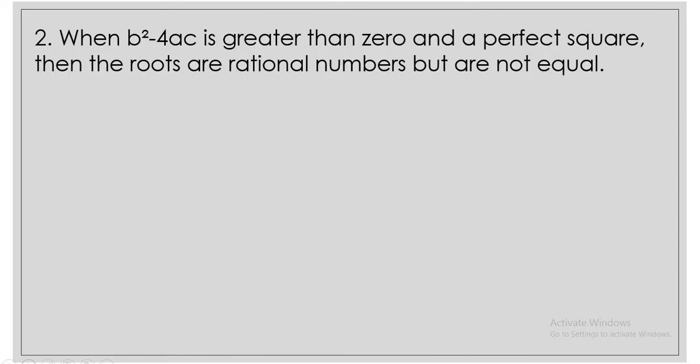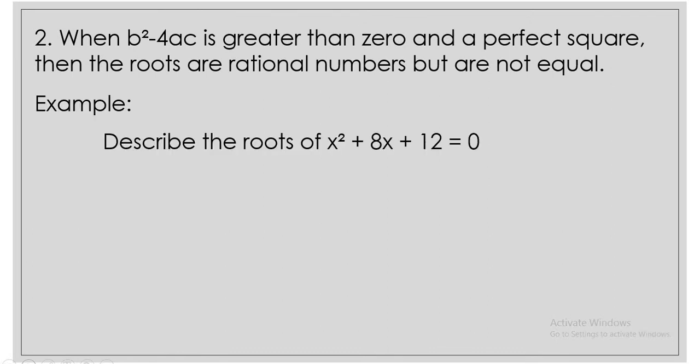Now, when b squared minus 4ac is greater than 0 and a perfect square, then the roots are rational numbers but not equal. Example: describe the roots of x squared plus 8x plus 12 is equal to 0.